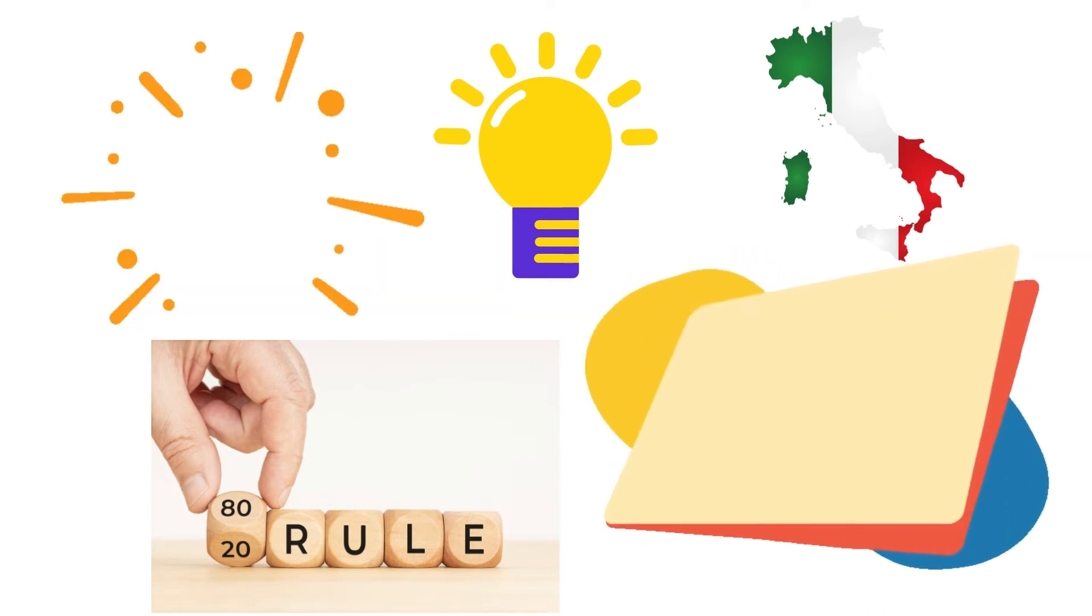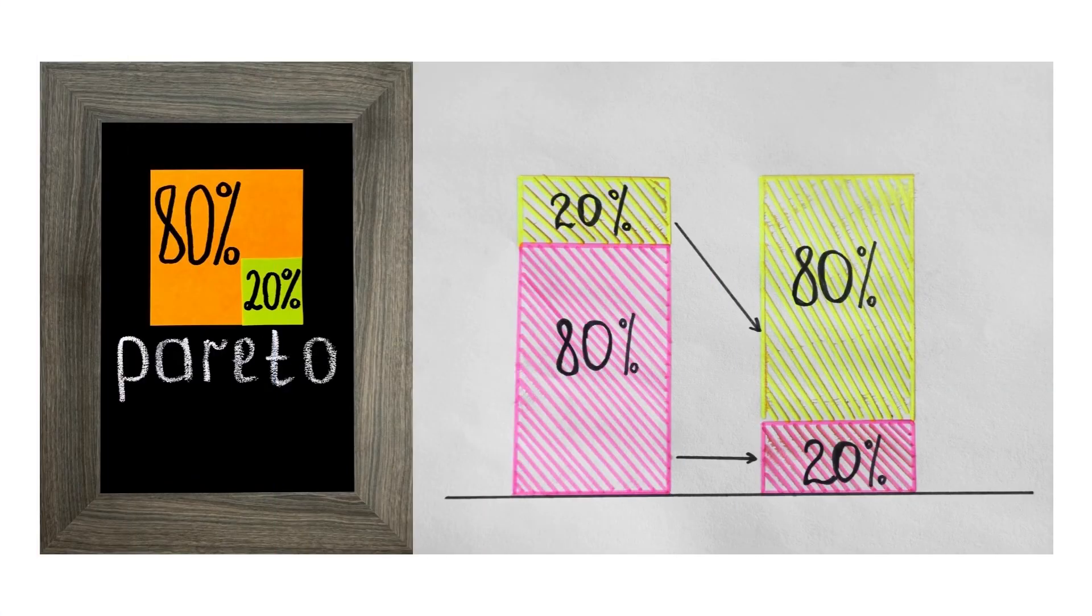An organization might raise the overall quality of its goods by concentrating on and addressing the 20% of manufacturing issues. This phenomenon was referred to by Juran as the crucial few and the inconsequential multitude.